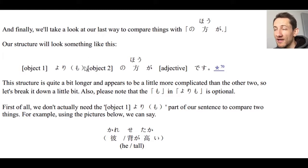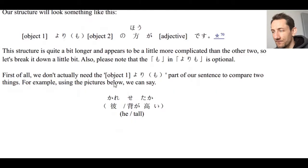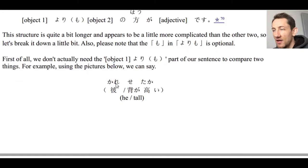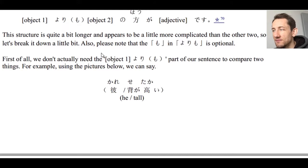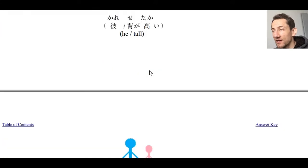Yori mo would be more polite, but it's optional, so sometimes you'll see sentences with it and sometimes without it. The first thing we're going to talk about is that we actually don't need the object one yori mo part to compare things. If we can understand through context what we're comparing, then we don't need it.